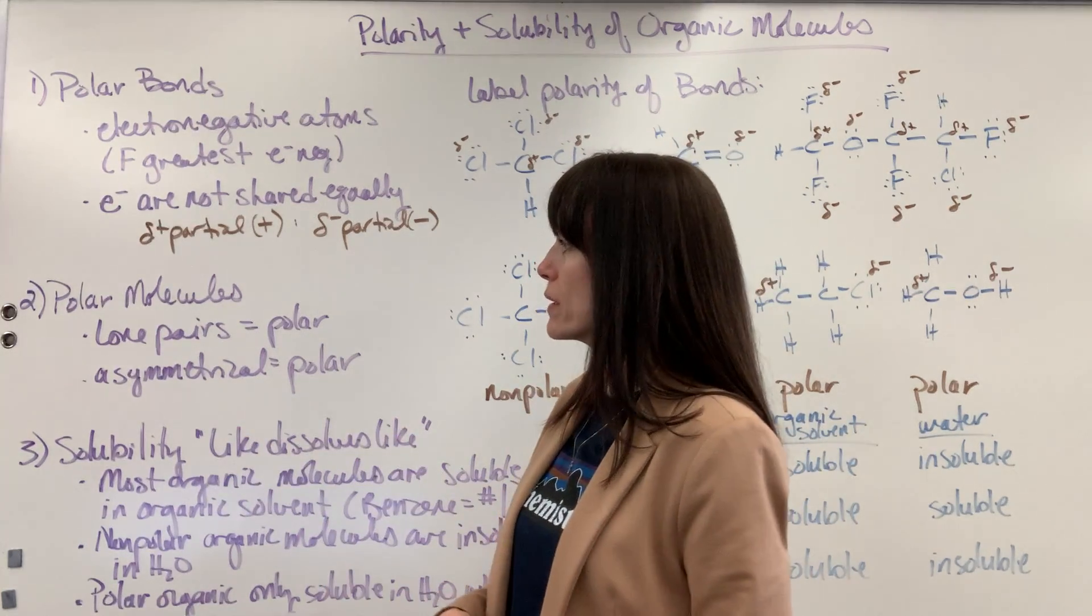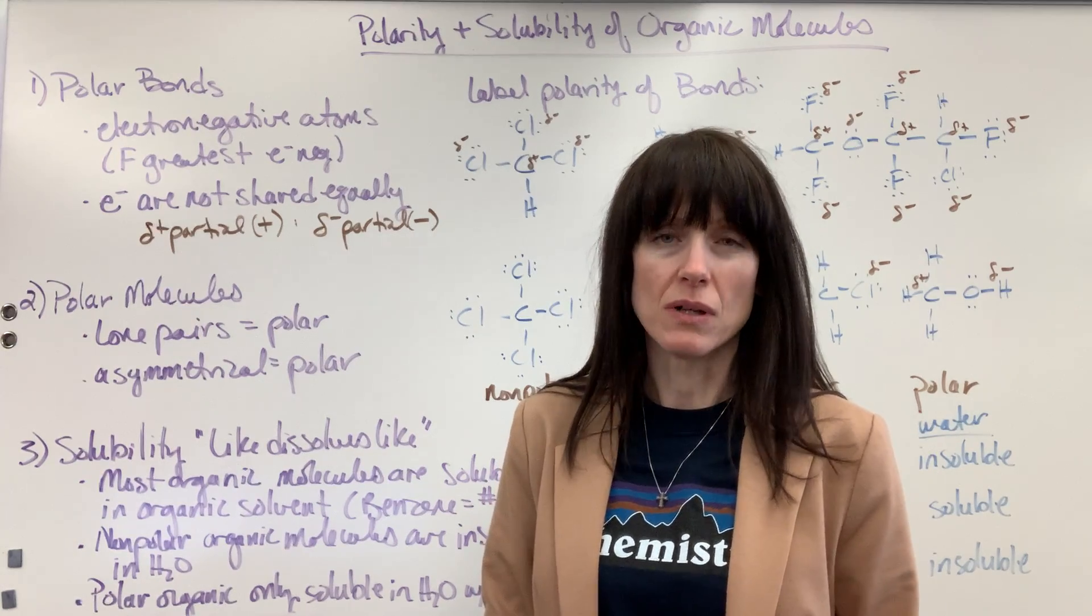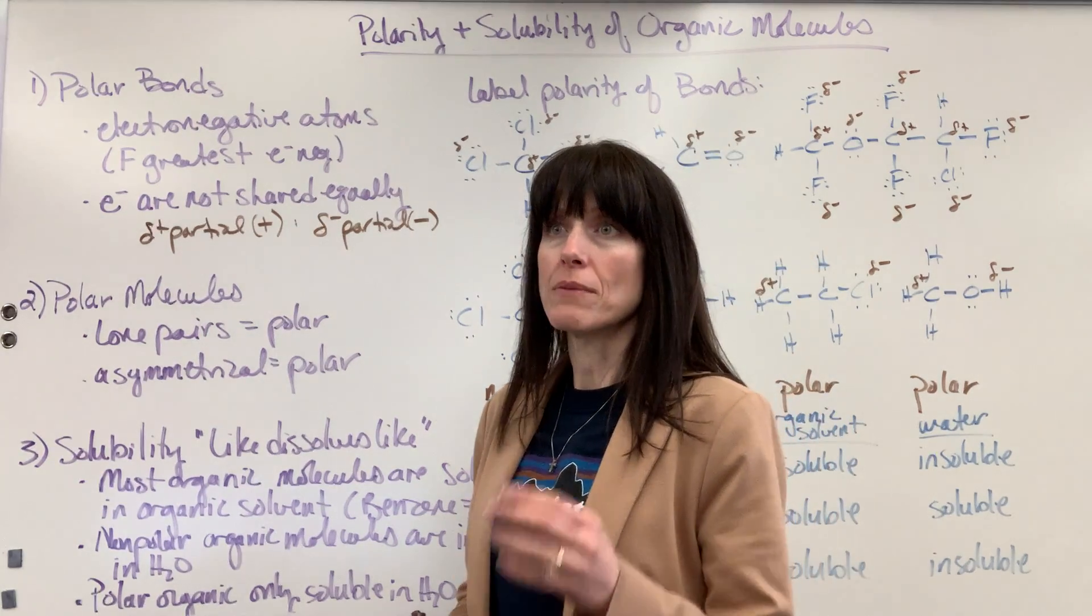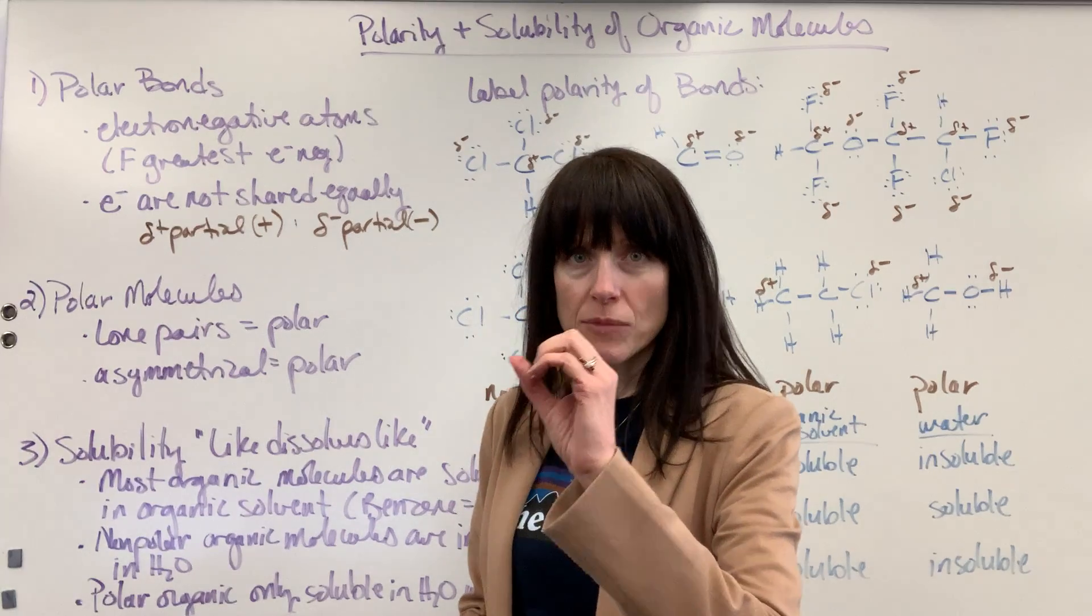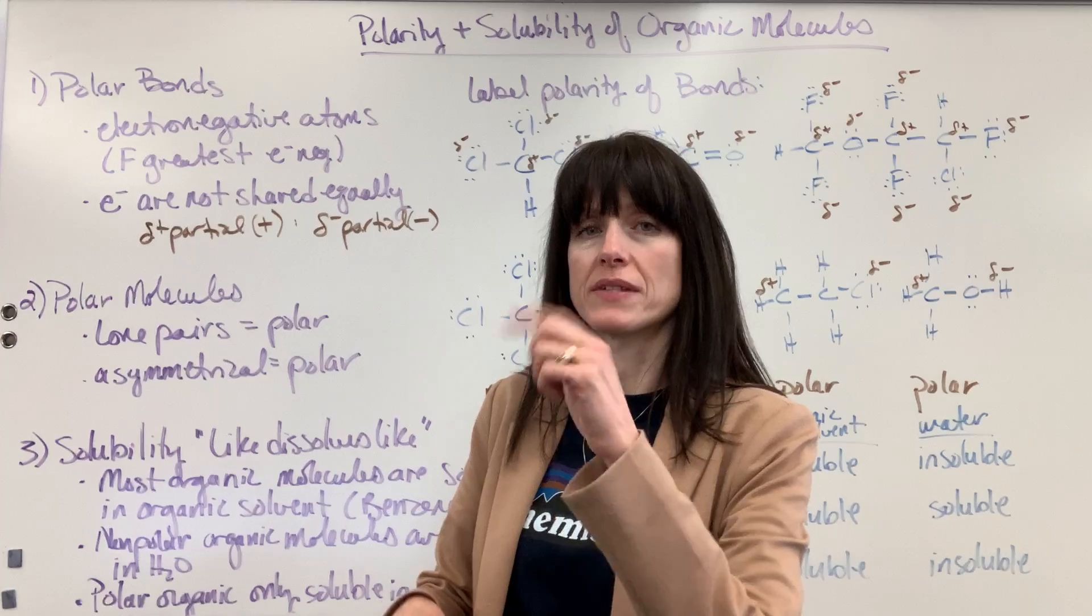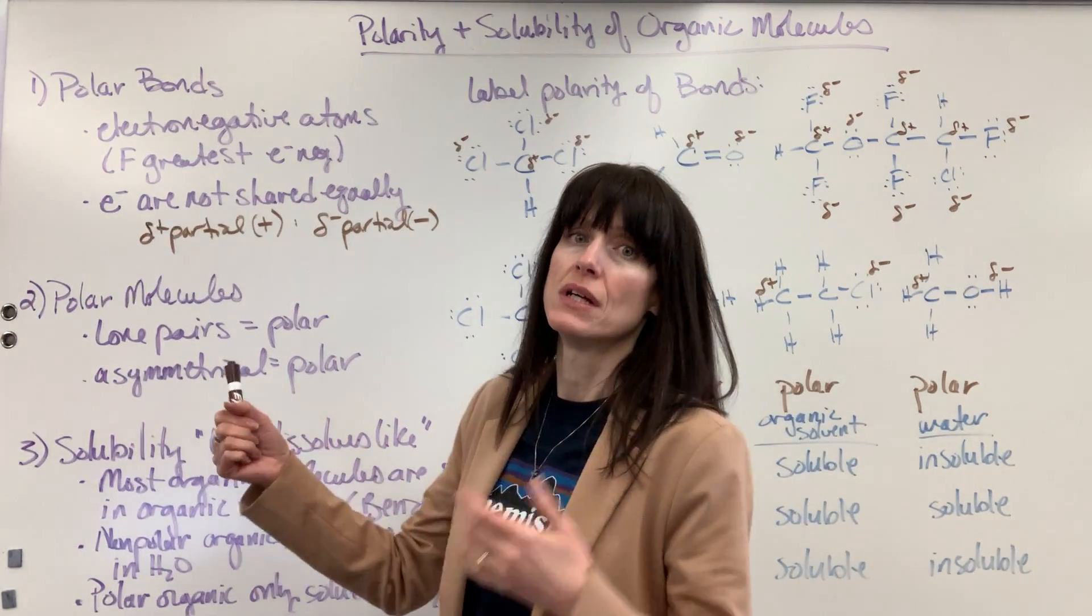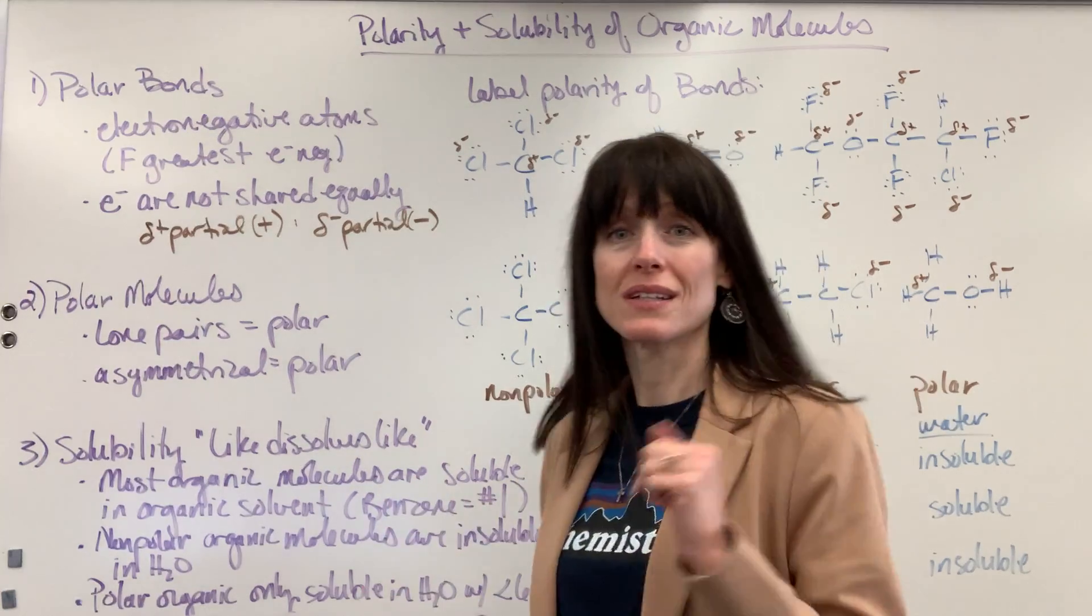And then the other really big one is asymmetry. If a molecule is not symmetrical, what I mean is the atom you're looking at, the central atom, it does not have identical substituents. If the substituents around that central atom are different, it's asymmetrical, is going to be polar. So let's look at some examples.